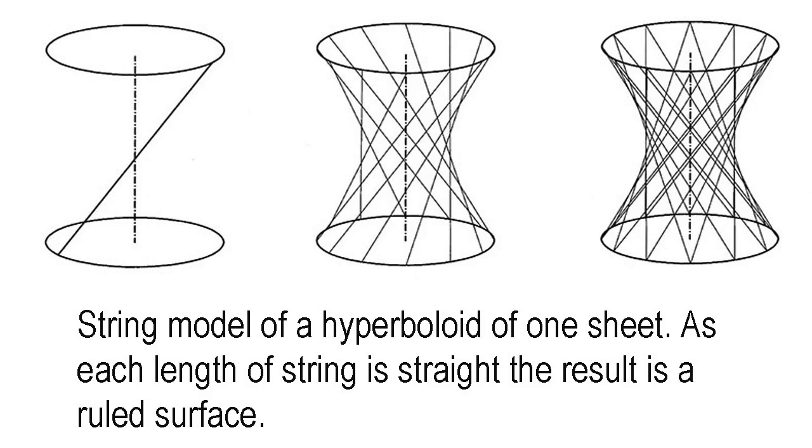Strings are then run through holes near the circumference of one circle to corresponding holes in the other circle that are a fixed distance further around the circumference. Each string is perfectly straight, but the surface that emerges takes the curved form of a hyperboloid.